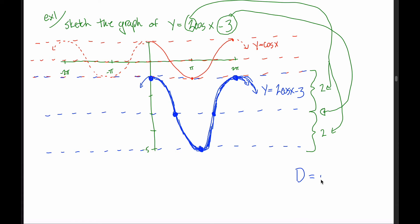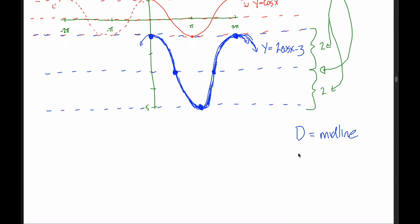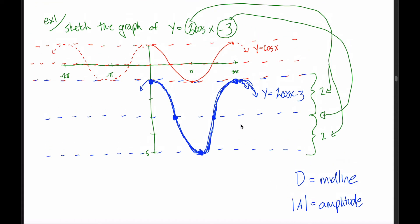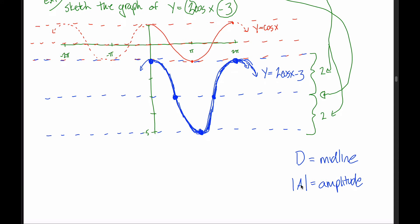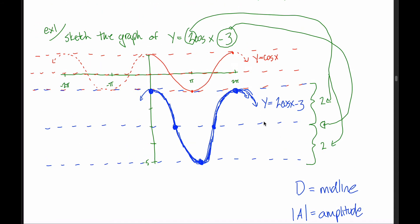D tells you where the middle of your graph goes — that's called the midline. A tells you how much higher or lower the graph gets from the midline at its maximum and minimum values — that's called the amplitude. Specifically, the amplitude equals the absolute value of a, because amplitude is a distance and must be positive.